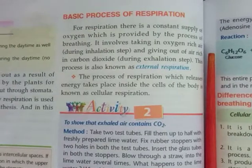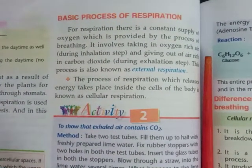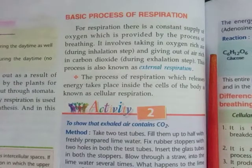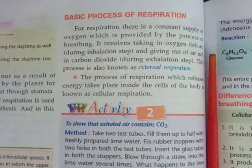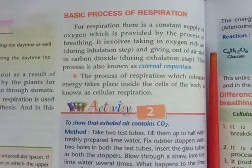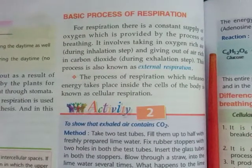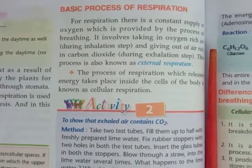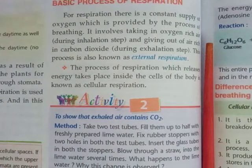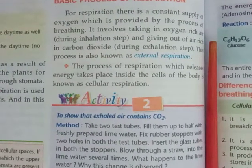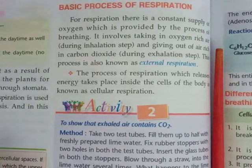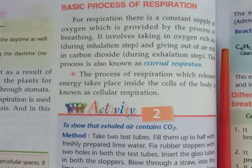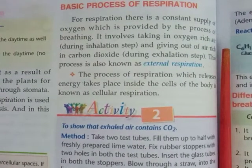Children, you know that for respiration, organisms need a constant supply of oxygen, and that is provided by the process of breathing. What is breathing? Breathing is a simple process of taking in oxygen and giving out carbon dioxide. Taking in oxygen during inhalation and giving out carbon dioxide during exhalation is called breathing, and this is also known as external respiration. In this process of breathing, cells are not involved — only organs are involved. This process takes place outside the cells, that is why it is called external respiration.